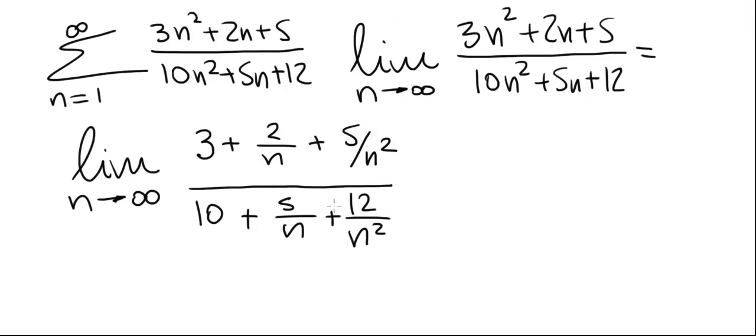Now, as n goes to infinity, 2 over n, 5 over n squared, 12 over n squared all go to 0. And this limit is 3 over 10.